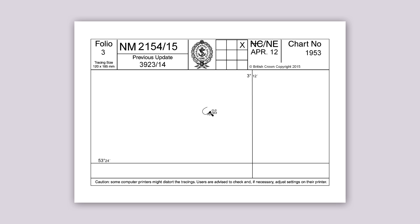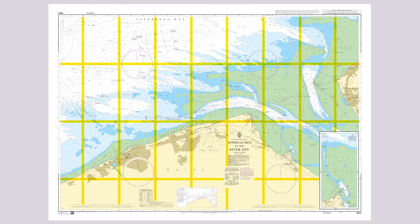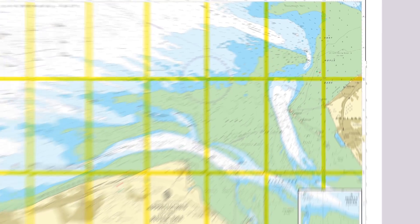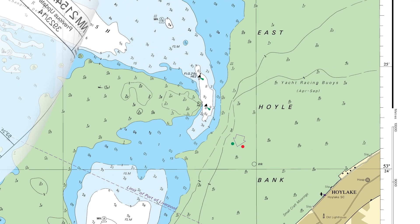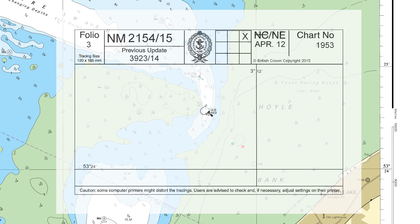This example will demonstrate how to move a buoy. Start by using the grid box to reference the NM position on the chart. Then, using the latitude and longitude guides on the tracing and the chart, lay the tracing to its exact location.